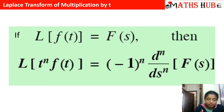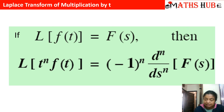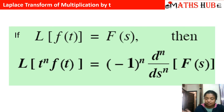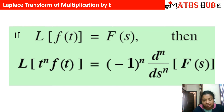Comparing the two formulas: in the derivative formula, taking the derivative on the left means multiplying by s on the right. Now in the multiplication-by-t formula, multiplying by t on the left means taking the derivative on the right hand side.